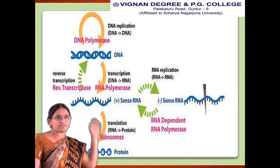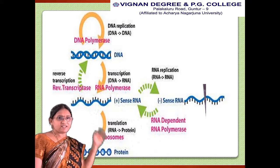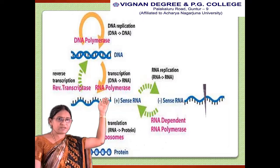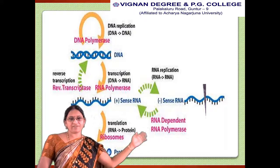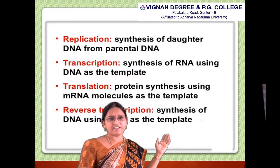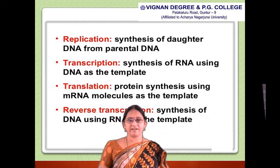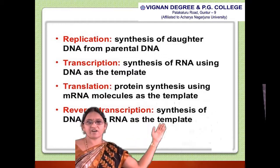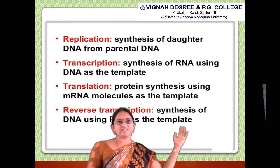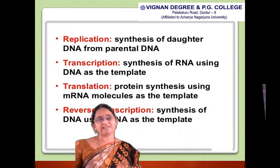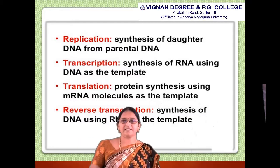From the DNA, RNA can be produced; from the RNA, protein can be synthesized. The same RNA undergoes reverse transcription to produce double-stranded DNA, and can also undergo replication to form another copy of the RNA molecule. In summary: replication is synthesis of daughter DNA from parental DNA; transcription is synthesis of RNA using DNA as template; translation is protein synthesis using mRNA as template; and reverse transcription is synthesis of DNA using RNA as the template.